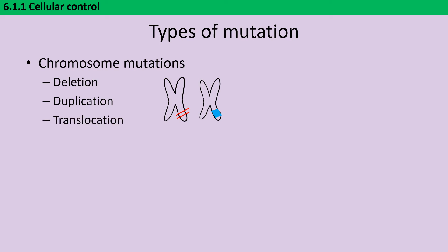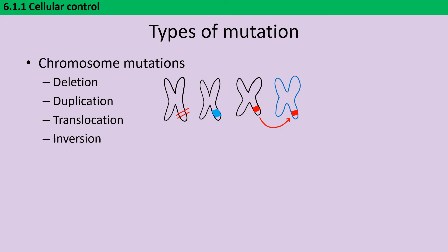Third, translocation — not to be confused with translocation in plants — where a particular section that should be on one chromosome is instead moved to a completely different chromosome. And finally, inversion events, where a particular piece of DNA that was one way around is flipped over so it's the other way around in the chromosome. This is especially disruptive if it's happening to part of a gene, as it will have a really disruptive impact on the protein.